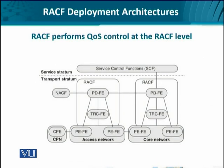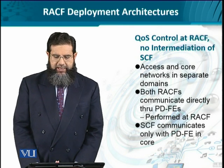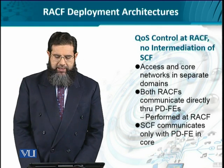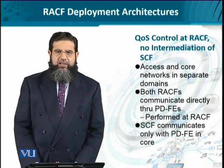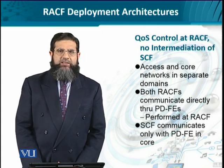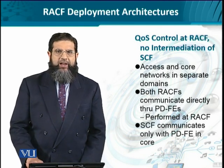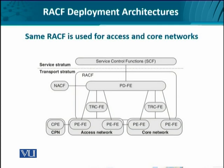The second option is when there is no mediation between the two RACFs through SCF. These RACFs, both for the access and core network, are managed independently and communicate with each other directly. The signaling for QoS control takes place between the two RACFs. The service control function in this case is scoped to the core network and does not communicate with the access network. Each domain has its own RACF, and their corresponding PDF-FEs talk to each other with no SCF involvement.